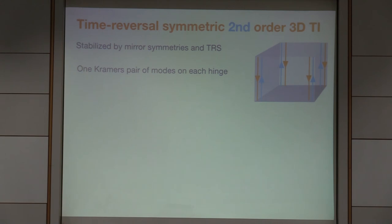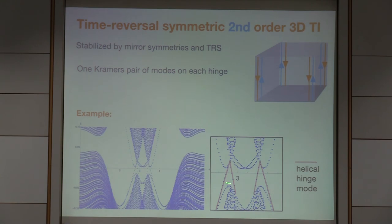And just one last word, you can also generalize this to time-reversal symmetric systems, so crystals that just as they grow without magnetic order, in which case you can show that by mirror symmetries to protect Kramers pairs of hinge modes, and here's a tight binding model that does that, and you see that there are Kramers pairs here.